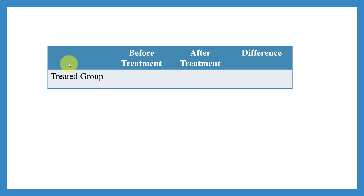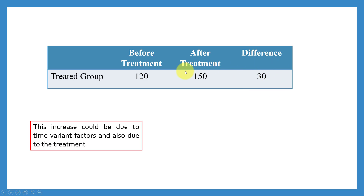Let's take an example. A new training program was introduced for elderly employees in an organization, and we want to study its impact on production efficiency — specifically the number of units produced. Before this training, employees in that specific age group would produce 120 products per day. After the treatment, they produce 150. The difference between after-treatment and before-treatment production is plus 30 units. We might conclude that production increased by 30 units due to this training program.